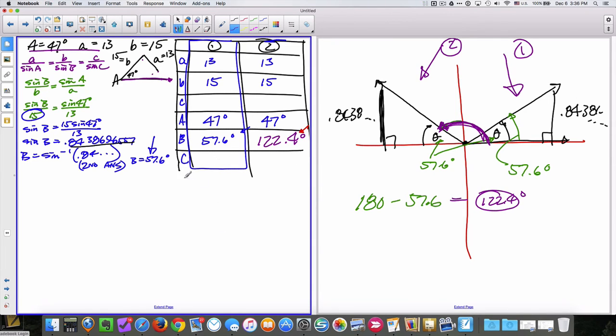Now how do we find angle C? Angle C for either one has to be true to triangle sum, meaning these three angles have to add up to 180 degrees. So I'm going to sum these two guys and subtract them from 180. Let's do the second one first. I get this to be 10.6 degrees. To get this one, I'll add these two together and subtract from 180, and I get 75.4.